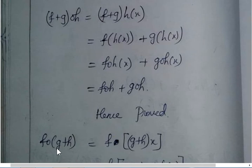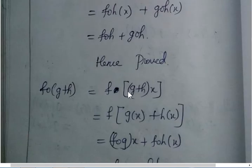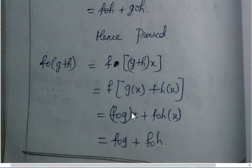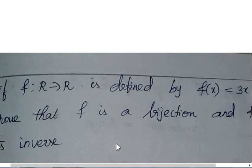And then what can you say about f composite g plus h? So, f composite (g+h) is nothing but (g+h)(x). It can be written as g(x) + h(x). And then you multiply it by f: f composite g(x) plus f composite h(x). So, fog + foh.